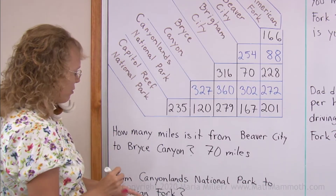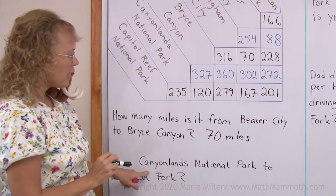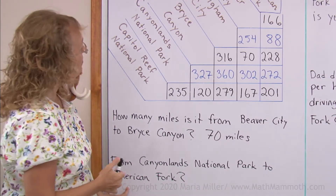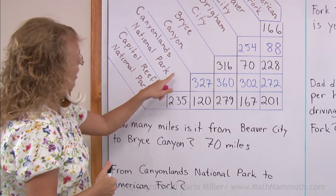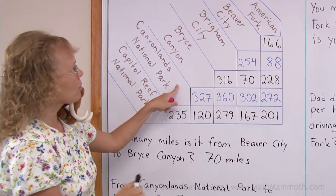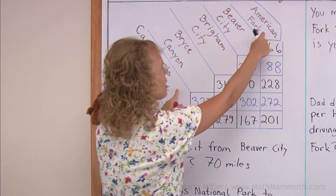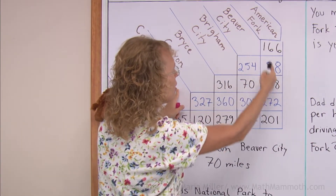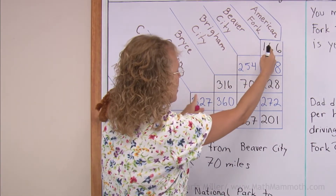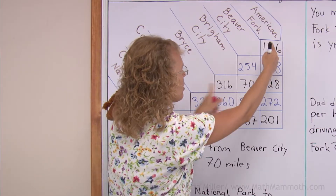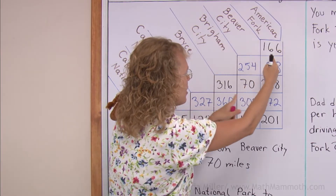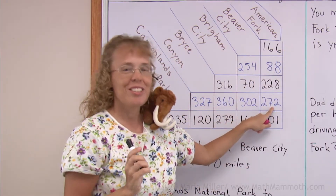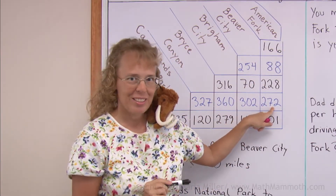How about from Canyonlands National Park to American Fork? Canyonlands National Park and American Fork — I go down from here, and then horizontally from here until I meet here: 272 miles.